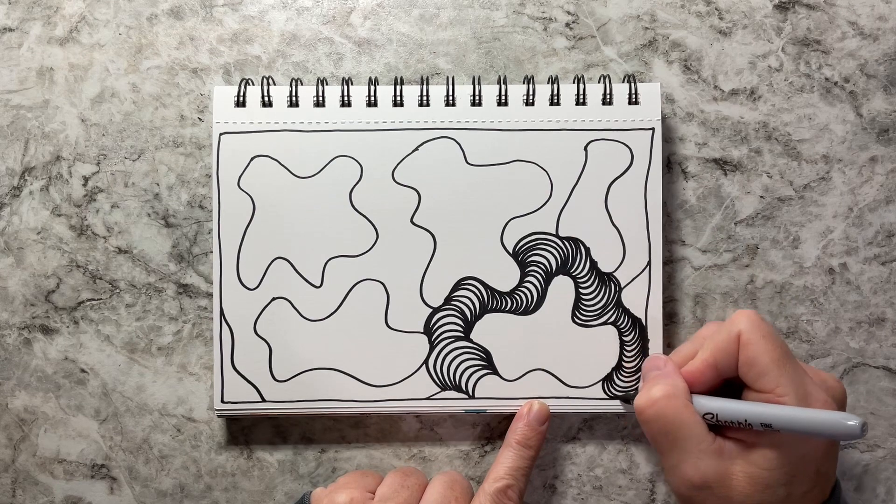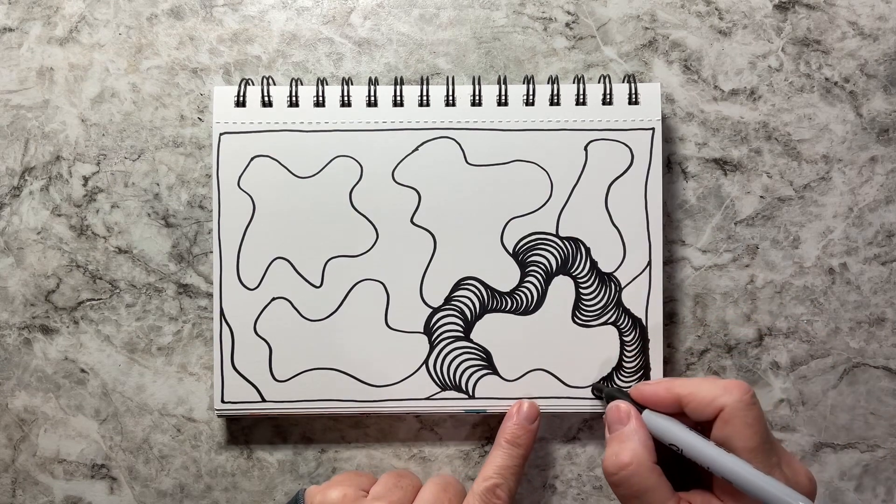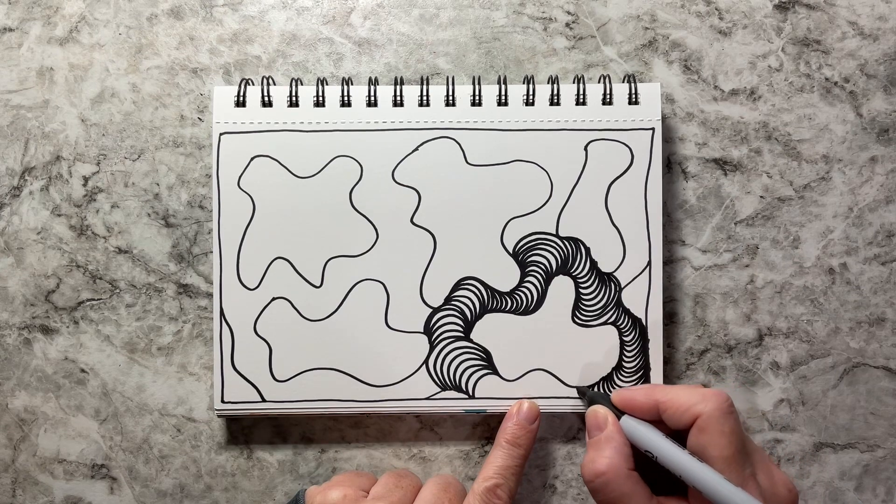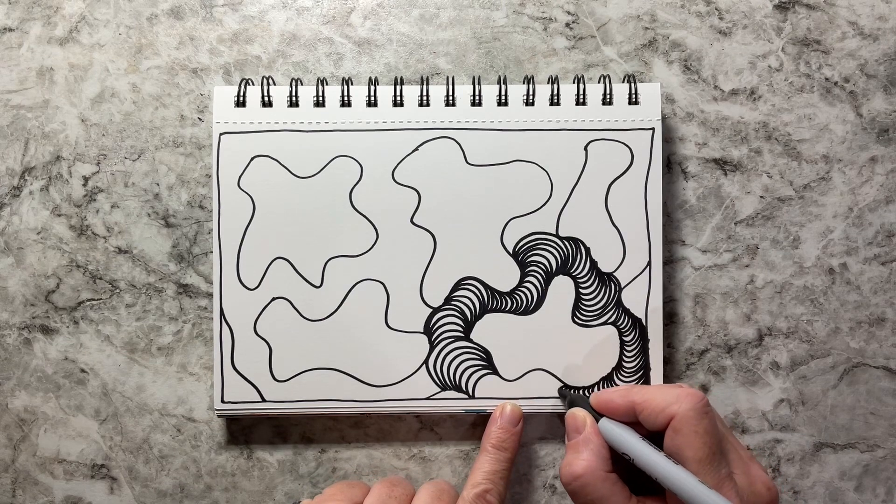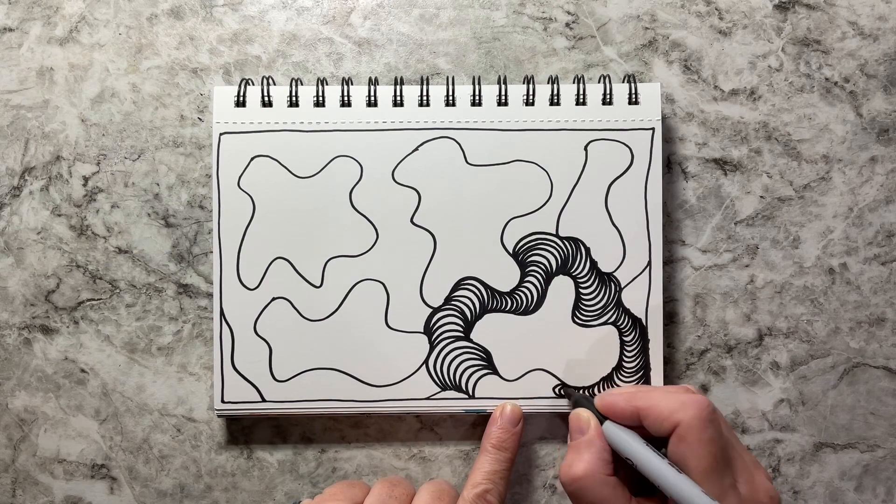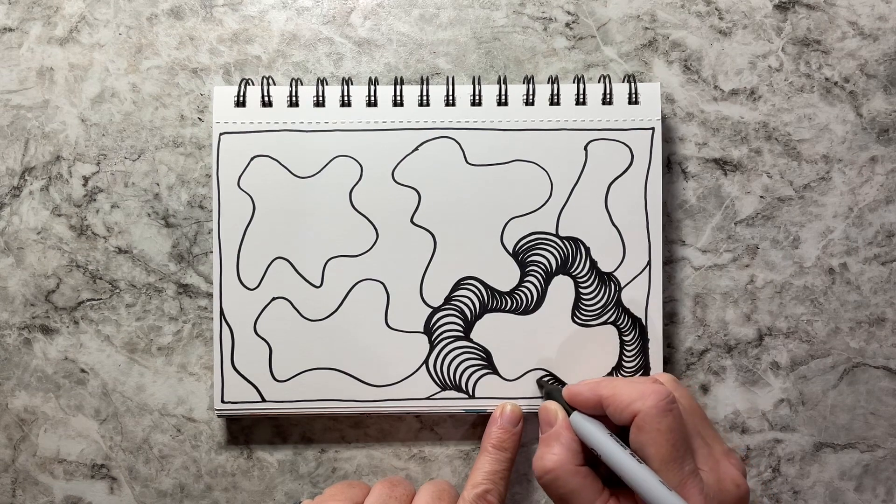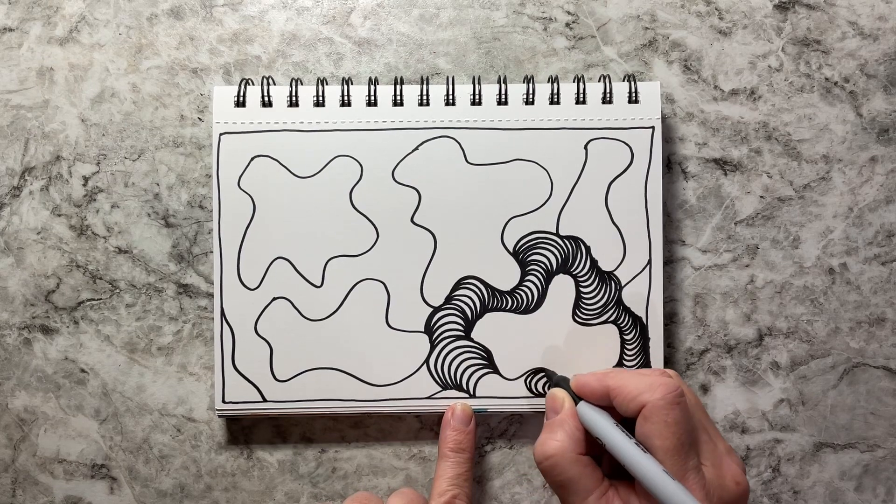First, we need to draw a frame or border around the edge of our page. I did try this without one and it works way better with a border. I also found I preferred mine without blobs that share a flat edge with the border, although they were in the example that inspired this week's project.